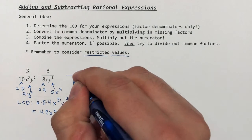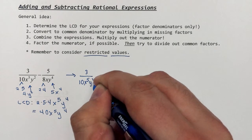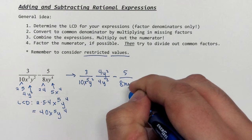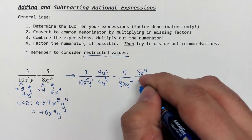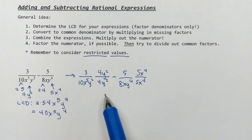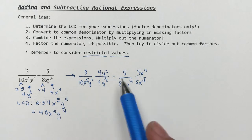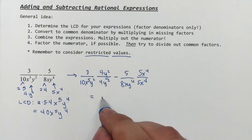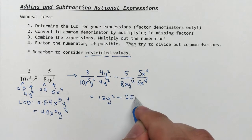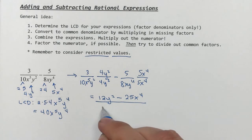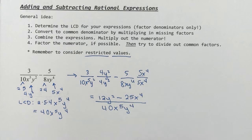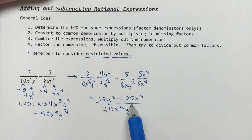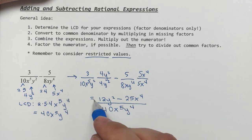Let's convert. 3 over 10x⁵y² multiplied by the missing factor 4y², minus 5 over 8xy⁴ multiplied by the missing factor 5x⁴. I can now combine these. Multiplying those numerators, I get 12y² minus 25x⁴ over 40x⁵y⁴, my common denominator. I would look to simplify, but the numerator does not factor — there's no common factor between these two. 12 and 25 are relatively prime, and one has y's where the other has x's, so this is already simplified.